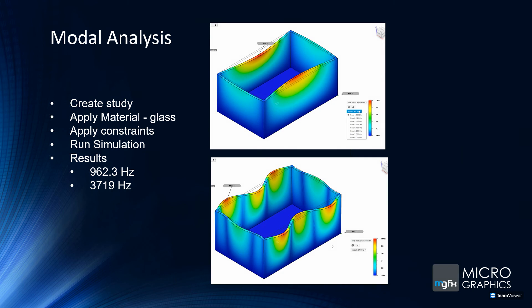How do we do a modal analysis? Similar to before: create your study, apply material — glass in this case — then apply constraints. The box I've created has a constraint at the bottom so it can't move. Then run the simulation. With modal analysis, you don't need to apply any load. You get results showing natural frequencies — for example, my first result was 962 Hz and my eighth was 3,719 Hz — showing how the object behaves under those different modal frequencies.